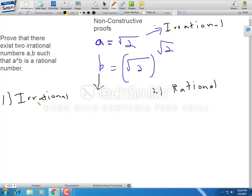In the first case, if b is irrational, we have b raised to a, which is the square root of 2 raised to the square root of 2, and the whole thing raised to the square root of 2. By the laws of indices,